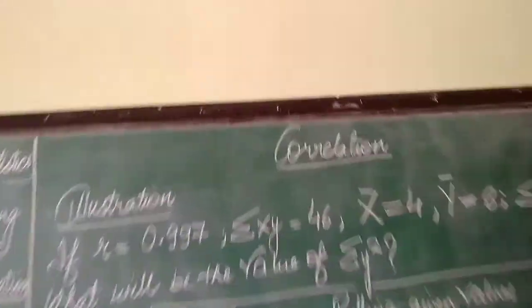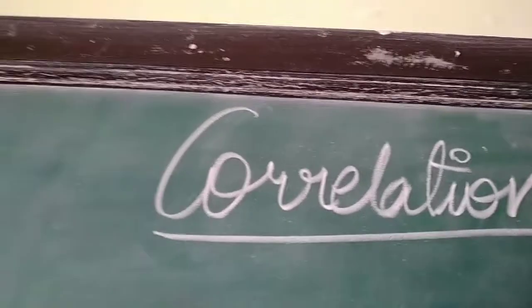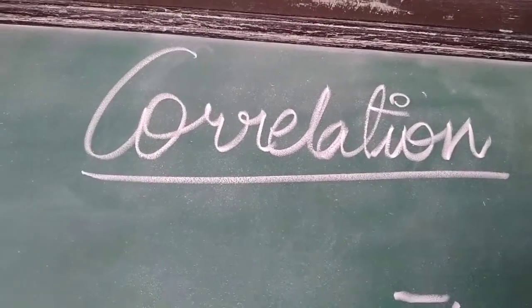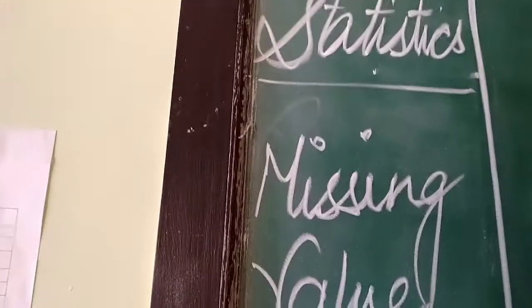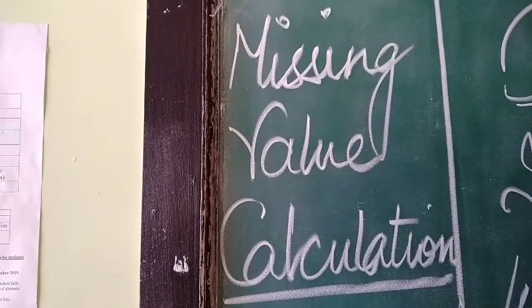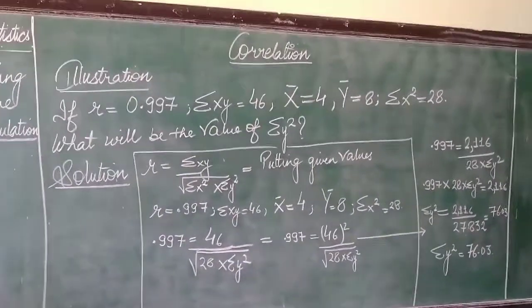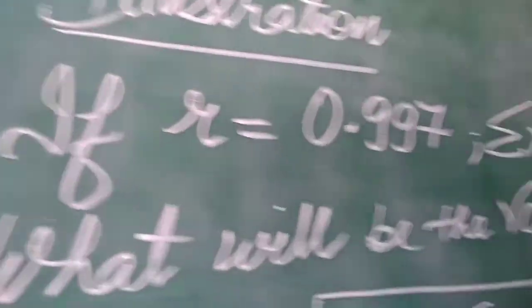Every time we calculate correlation we put up the formula, but sometimes we have been delivered with some missing values and those missing values have to be calculated in statistics. Today we will learn how to calculate missing values in correlation. I have presented you with the solution and now let's read each point very minutely.